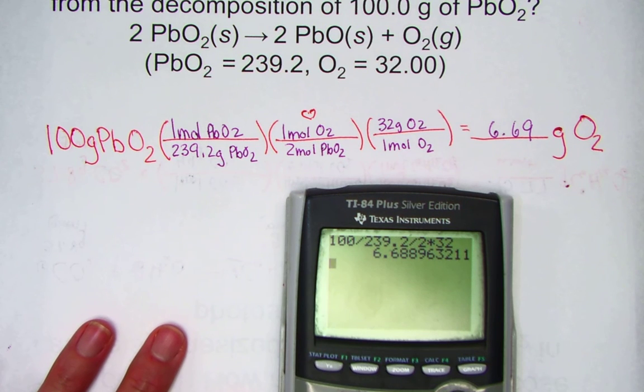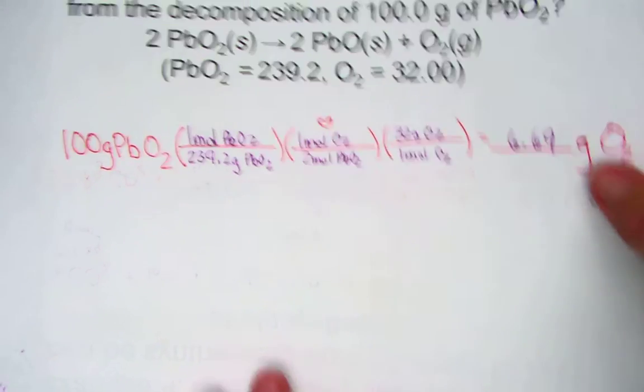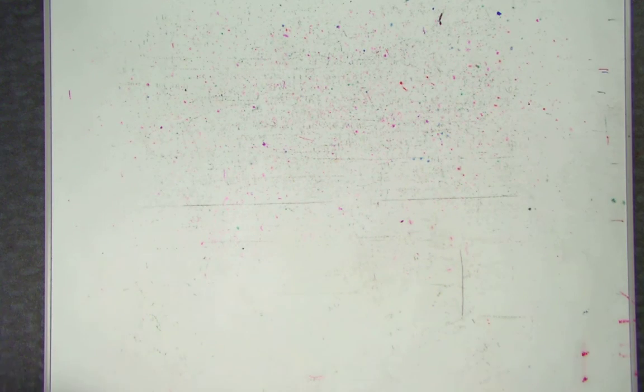I hope we reached a common answer: 6.69 grams of oxygen. One more opportunity to practice a mass-mass problem.